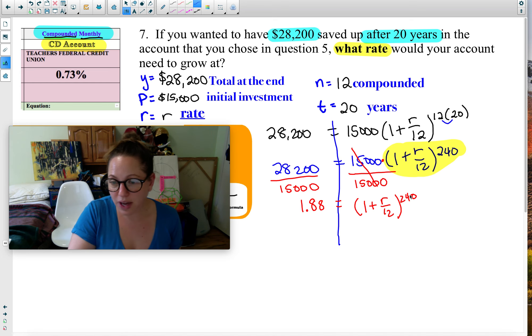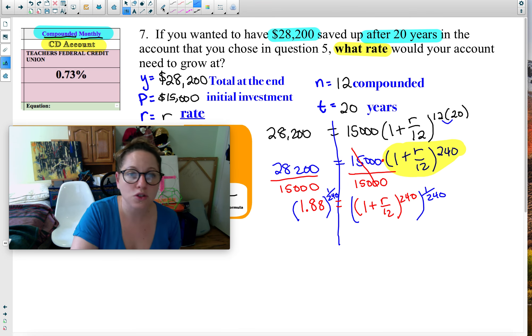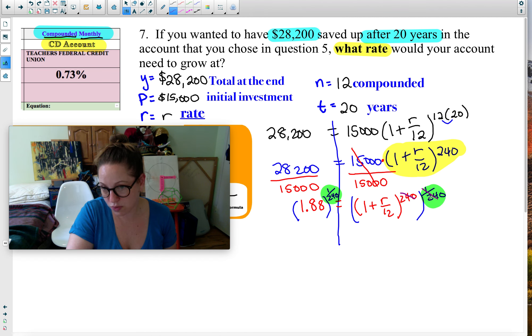To get r by itself, I need to get rid of the exponent. We learned in power equations that to get rid of an exponent, you do the reciprocal. 1 over 240, because it's 240 here, and they're going to cancel out if it's on top and bottom. So I put the parentheses. It has to go on the right side, where exponents always go. And I write the exact same thing on both sides. The reason I do that is because on this side, the 240 and 1 over 240 cancel. So now I'm getting much closer to r being alone.